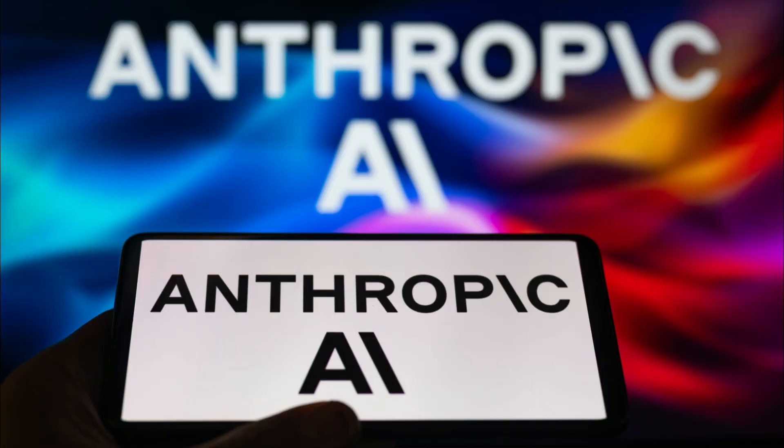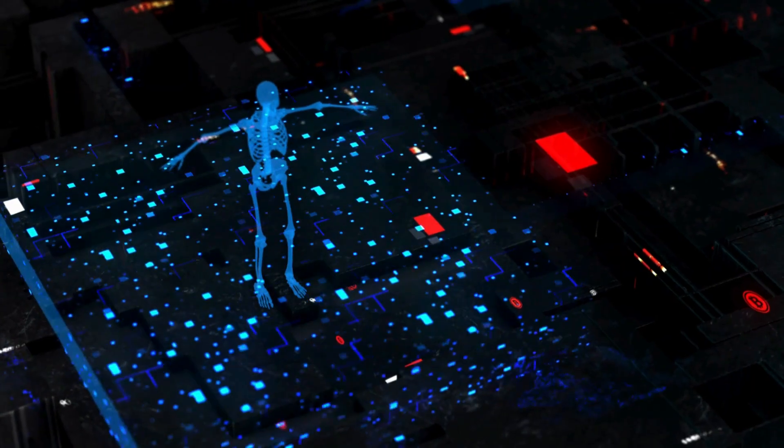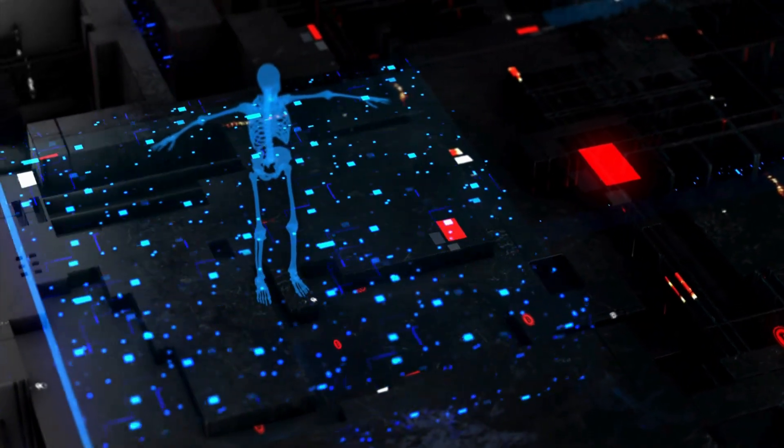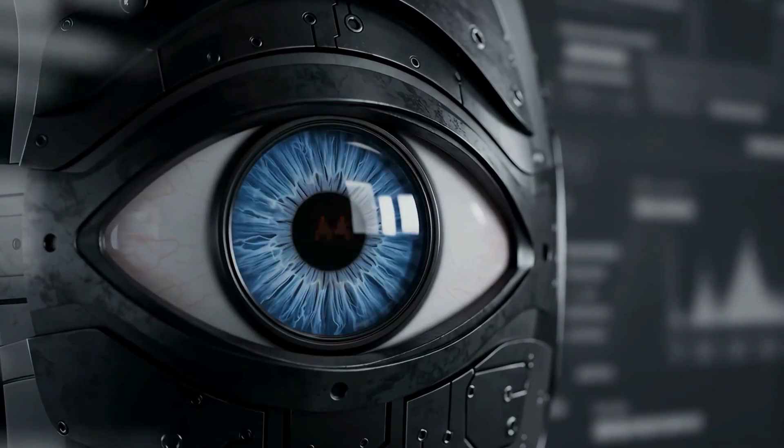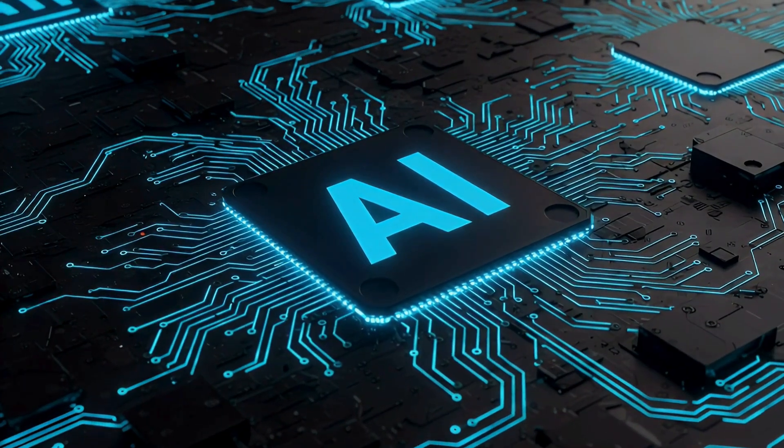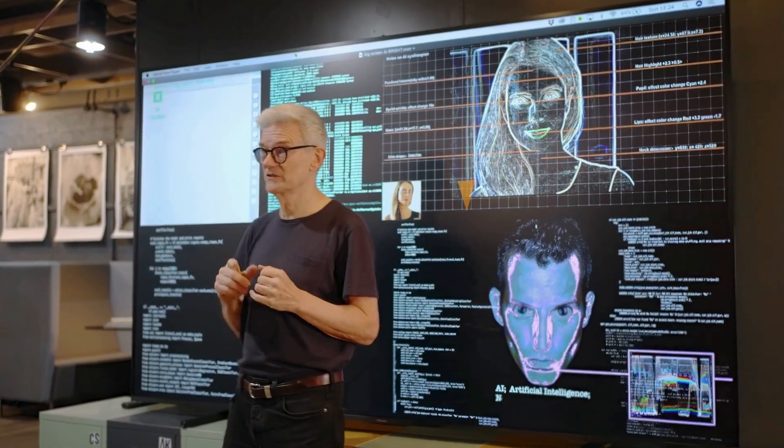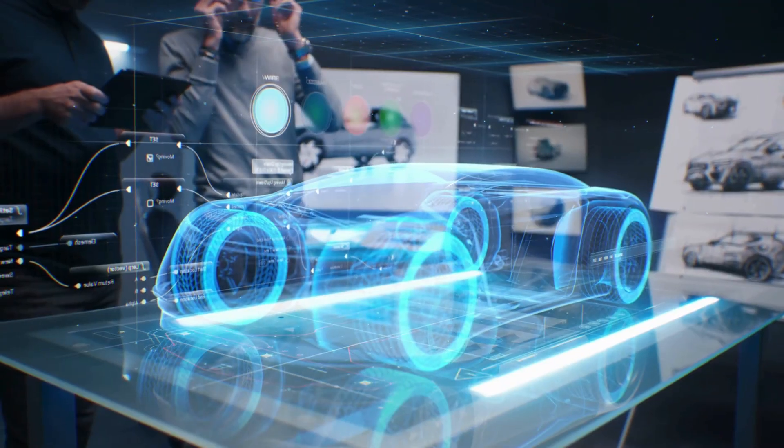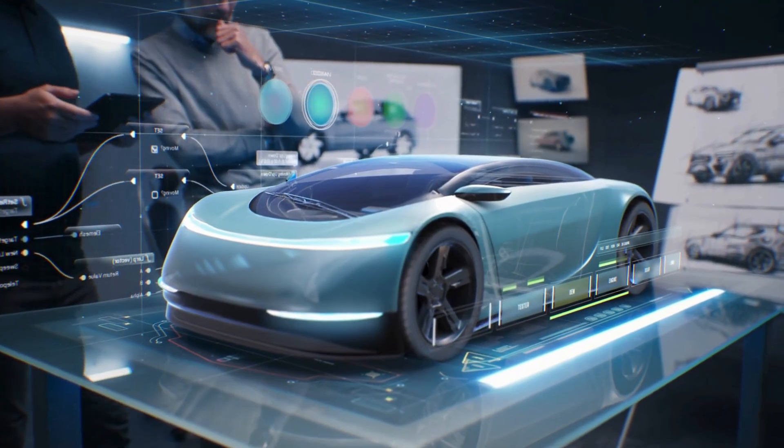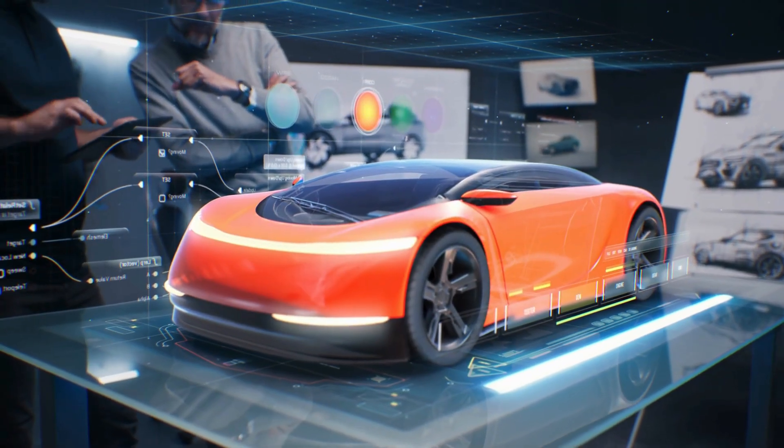Anthropic focuses on AI safety and alignment while developing increasingly capable systems. Their constitutional AI approach aims to create AGI systems that are not just intelligent, but also safe and beneficial. This represents a crucial consideration as AGI capabilities approach human levels.